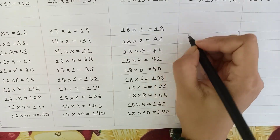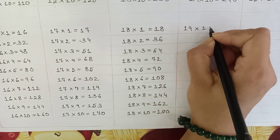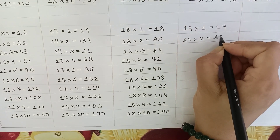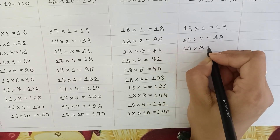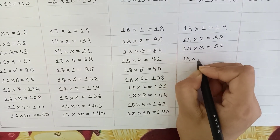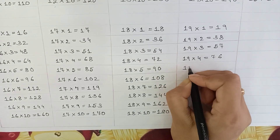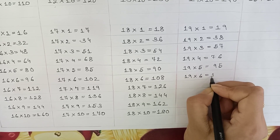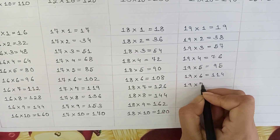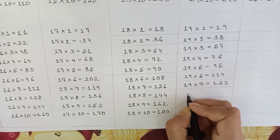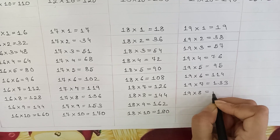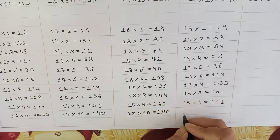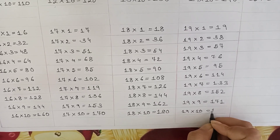Next: 19 table. 19 x 1 is equal to 19. 19 x 2 is equal to 38. 19 x 3 is equal to 57. 19 x 4 is equal to 76. 19 x 5 is equal to 95. 19 x 6 is equal to 114. 19 x 7 is equal to 133. 19 x 8 is equal to 152. 19 x 9 is equal to 171. 19 x 10 is equal to 190.